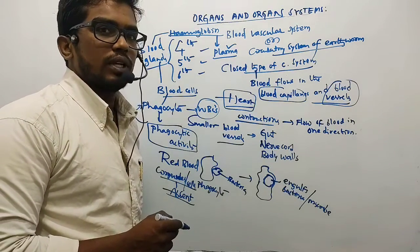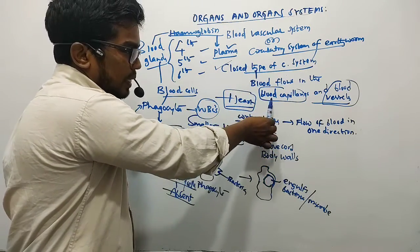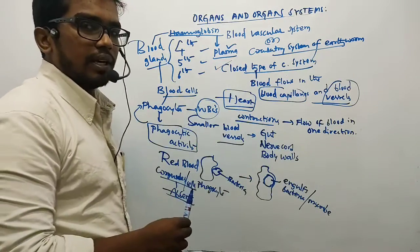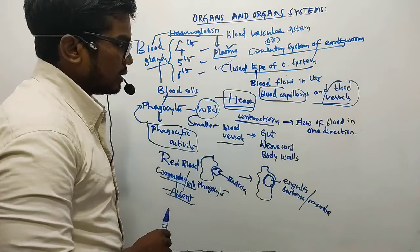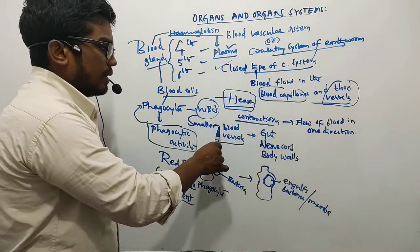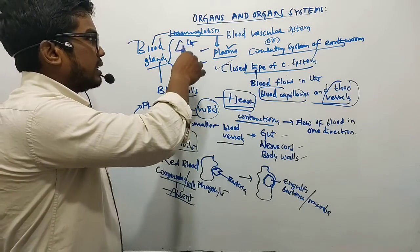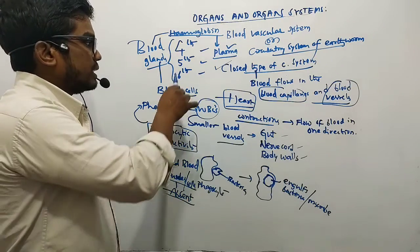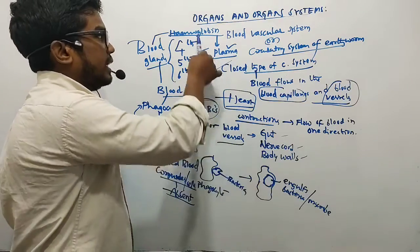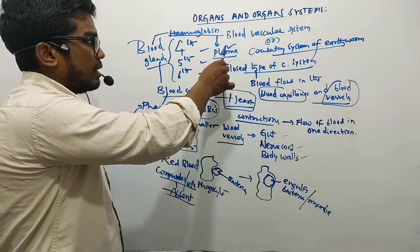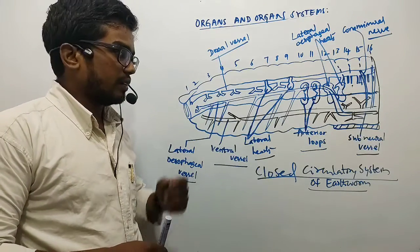To recap: earthworms have a closed circulatory system where blood flows in blood capillaries and vessels. They have a pumping organ called the heart which contracts to move blood in one direction. Smaller blood vessels supply the gut, nerve cord, and body walls. Blood glands in the 4th, 5th, and 6th segments produce phagocytes and hemoglobin, which is dissolved in the plasma. RBCs are absent.